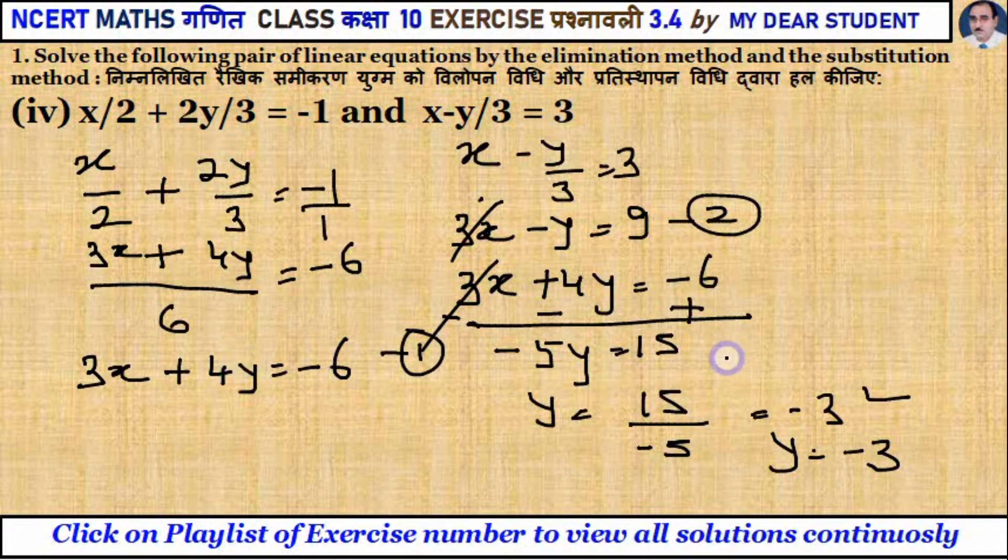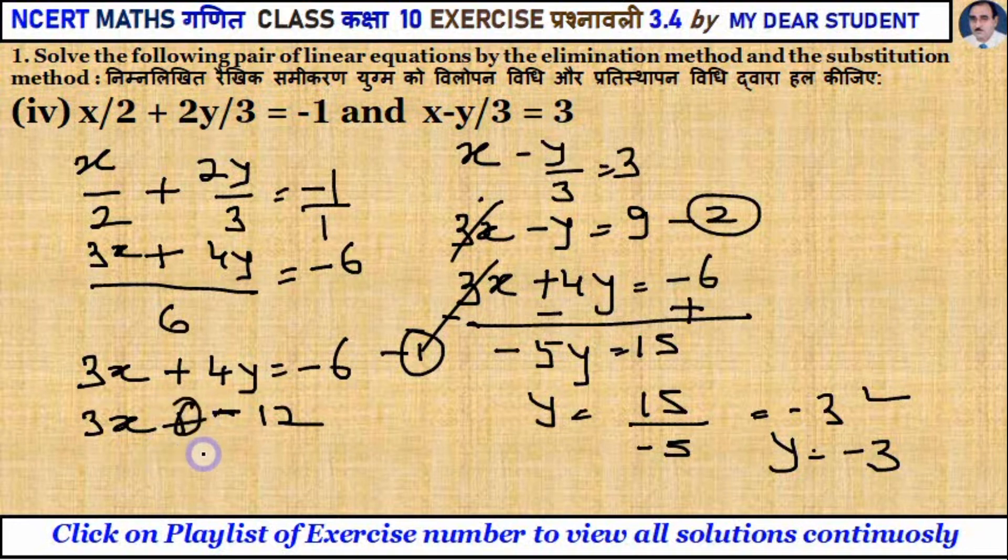Now you can put it in equation 1. What is equation 1? This is 3x plus 4y. So y is minus 3. So 3x plus 4 times minus 3 is equal to minus 6. Plus or minus, so this is plus and minus will be minus. So this equals minus 6.